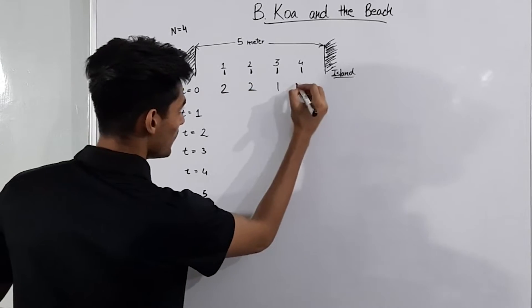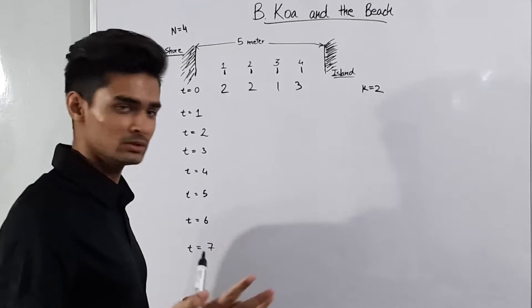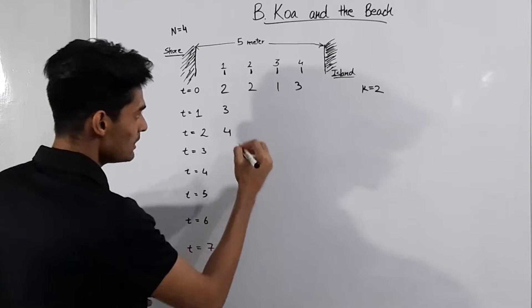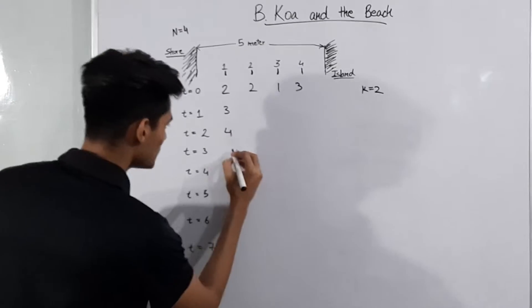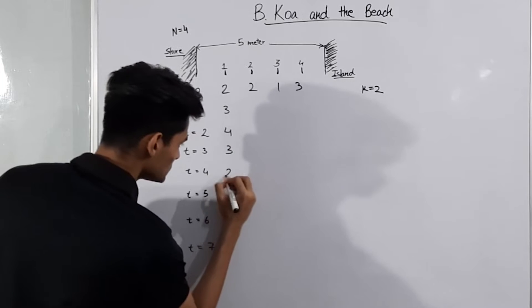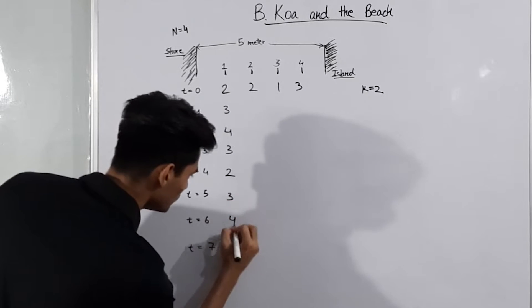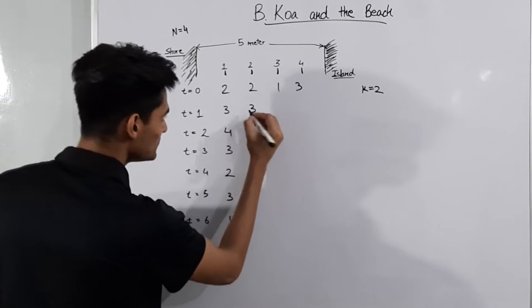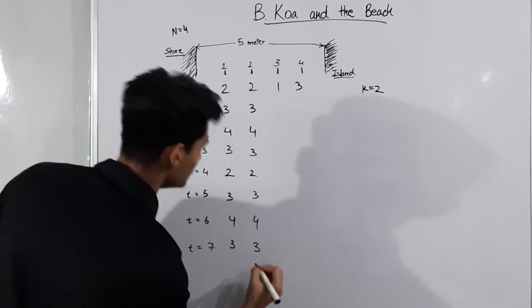Let's take an example where the depths are 2, 2, 1, and 3, and k equals 2. The depths increase for the next 2 seconds: so depth 2 becomes 3, then 4. Then depths decrease for 2 seconds: back to 3, then 2. The pattern then repeats: 3, 4, 3. The same pattern applies to the second point with depth 2: 3, 4, 3, 2, 3, 4, 3.